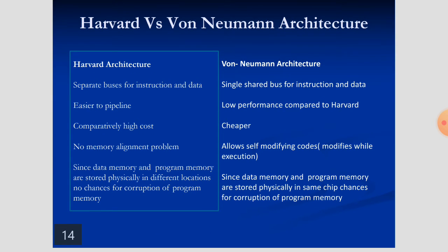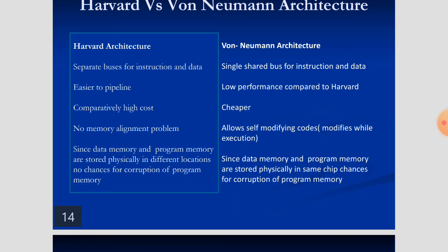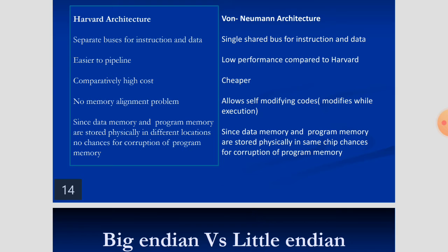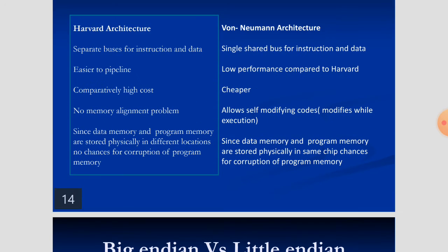Harvard vs Von Neumann architecture: Harvard architecture uses separate buses for instruction and data memory, making it easy to pipeline and giving high performance. Von Neumann (single shared bus for instruction and data) has lower performance because while accessing data you can't access the program simultaneously. Harvard is more expensive due to separate memories; Von Neumann is cheaper using a single memory. In Von Neumann, there is a chance of corrupting program memory while accessing data memory — this is a key problem.